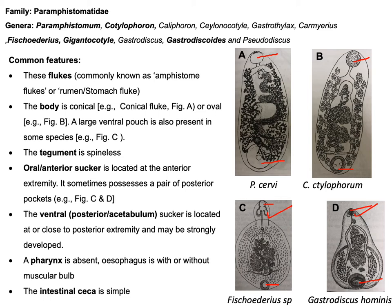For trematodes, they possess an incomplete digestive system. For most genera, they don't have a pharynx, but sometimes they have an esophagus without a muscular valve. The intestinal caeca run on both sides of the body — one on the right side and one on the left side — and they are simple, meaning there is no lateral branching. Compare this to species like Fasciola hepatica and Gigantocotyle, where the intestinal caeca are laterally branched.